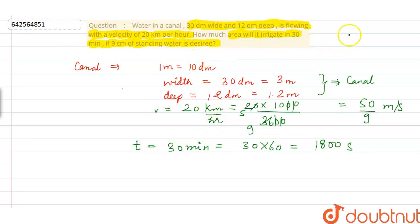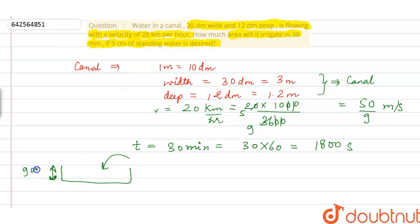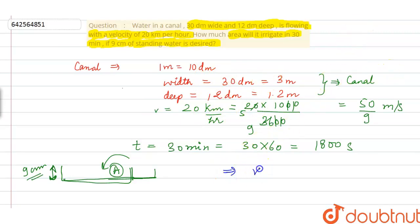If 9 centimeters of standing water is desired, we know that water continuously flowing will be accumulated for irrigation. Water is flowing in the canal, and it is required that a 9-centimeter height of water covers the irrigation area. We do not know the area, so we need to calculate the volume of water flowing in this time period.